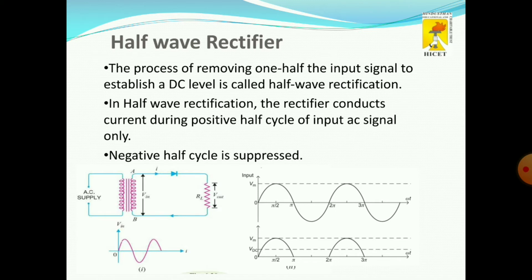During the negative half cycle, we change the polarity — A is negative and B is positive. During this type of operation, the diode will be in reverse bias condition, so it will not conduct the current. Therefore the output will be in a blocked state, and there will be no output voltage generated in the pi to 2 pi interval.